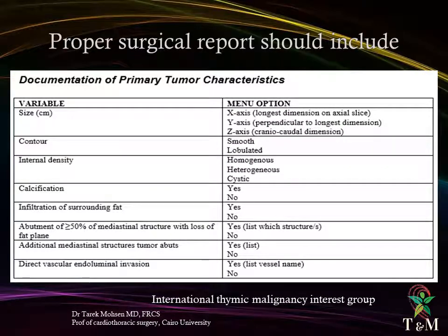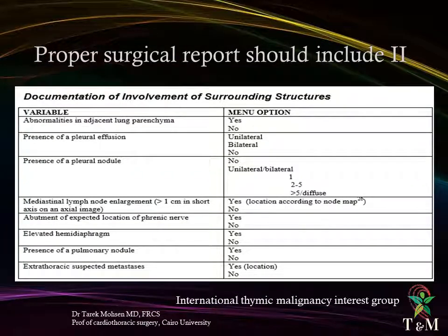The proper surgical report should include documentation of primary tumor characteristics: size in three dimensions, contour (smooth or lobulated), internal density (homogeneous, heterogeneous, or cystic). The following should be stated as present or absent: calcification, infiltration of surrounding fat, abutment of more than 50% of mediastinal structures with loss of fat plane, additional mediastinal structures the tumor abuts, and direct vascular endoluminal invasion. The report should also document involvement of surrounding structures, including abnormalities in adjacent lung parenchyma, mediastinal lymph node enlargement, abutment of the expected location of the phrenic nerve, elevated diaphragm, presence of pulmonary nodules, extra-thoracic suspected metastasis, and presence of pleural effusion and nodules (unilateral or bilateral).